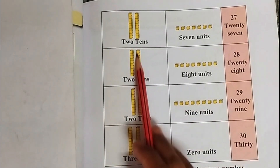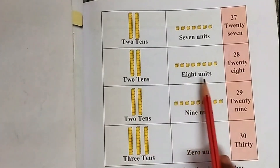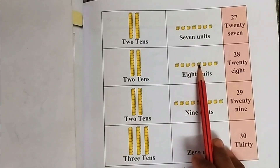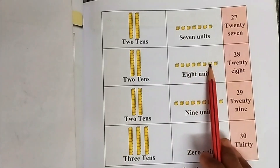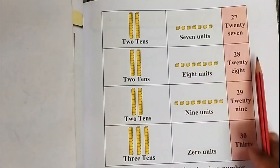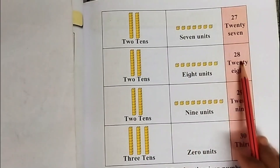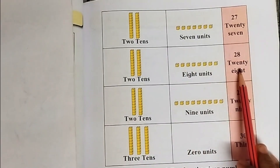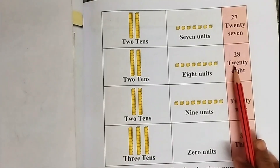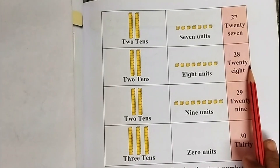1 ten, 2 tens, and 8 units: 28. In figure: 28. In words: T-W-E-N-T-Y (20) E-I-G-H-T: 28.